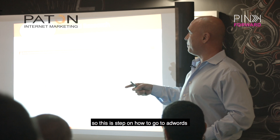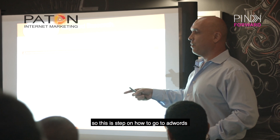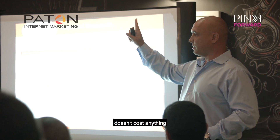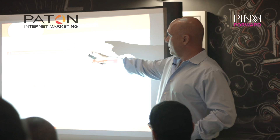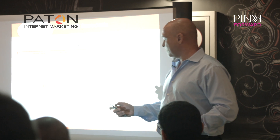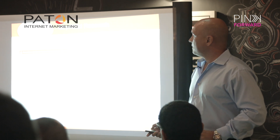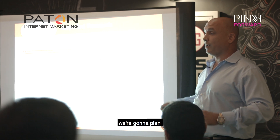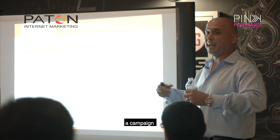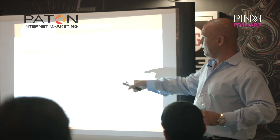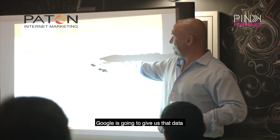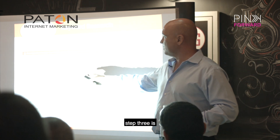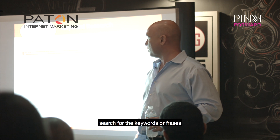This is step-by-step on how to go to AdWords. It's free to create an account — it doesn't cost anything. First thing you do is go to Tools. Step two is you go to Keyword Planner. We're going to plan a campaign with pay-per-click, and Google is going to give us that data. Step three is search for the keywords or phrases.